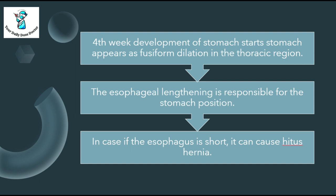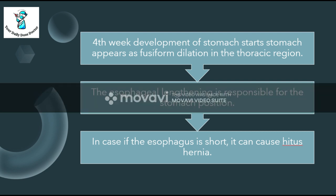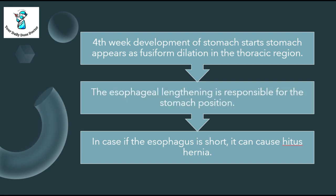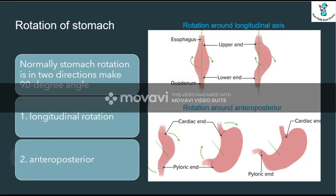The stomach develops in the form of a fusiform dilation, precisely in the thoracic region — specifically the right diaphragm region. Esophageal lengthening is responsible for the stomach position, because if there is any shortage or short lengthening of the esophagus, it can cause congenital anomalies like hiatus hernia or diaphragmatic hernia.